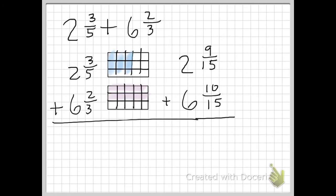The whole numbers stay the same. The only thing I've been working with right now are just the fractions. Now I have equivalent fractions. So the equivalent fraction of 3 fifths is 9 fifteenths and the equivalent fraction of 2 thirds is 10 fifteenths.